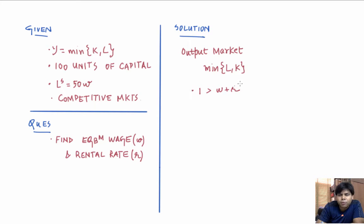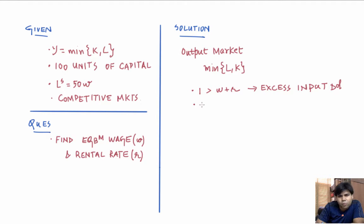If one is greater than w plus r, then the price of output exceeds the cost, so a firm can make infinite profits. The firm would want to demand infinite amounts of labor and capital. But since capital is only 100 units, this cannot be market clearing — it leads to excess demand for inputs.